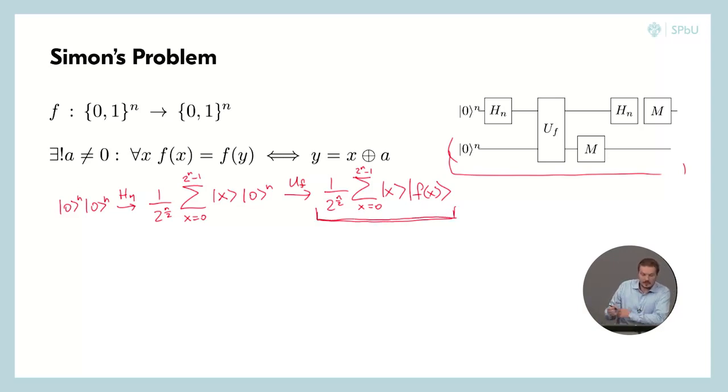And now we have a quantum state which holds all the values of the function f in it. Isn't that amazing? We just discussed that for classical case this number of bits makes the problem intractable. But we can easily imagine this number of qubits. And the system with this number of qubits can easily store all the function values inside of its state. This is where the computing power of quantum computers come from.